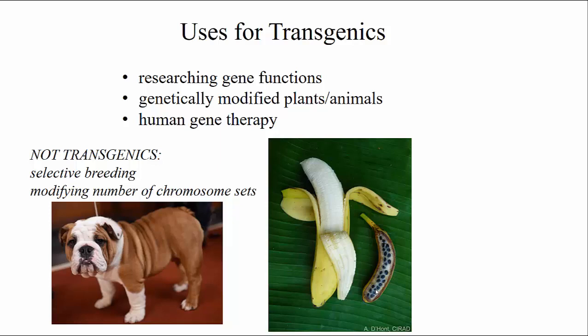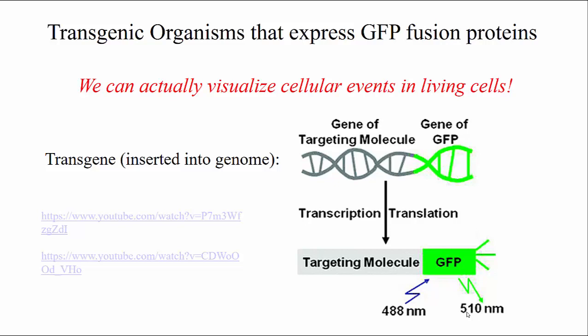One big use for transgenic organisms is in research, and we have learned so many different things by making transgenic organisms. One particular example is the green fluorescent protein, which we've used before in this class. GFP is a naturally fluorescent molecule that, if you shine the correct wavelength of light on it, will fluoresce green.